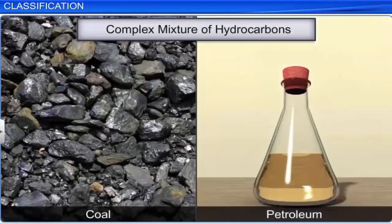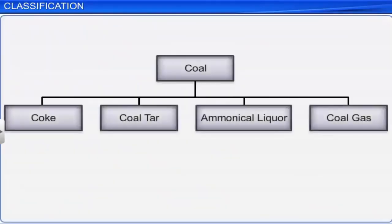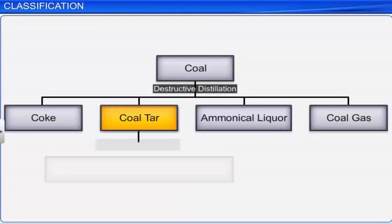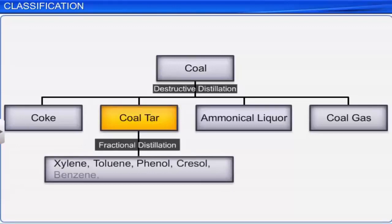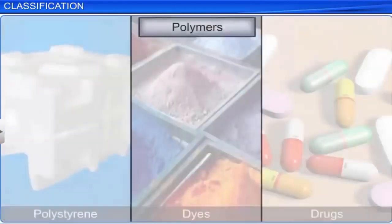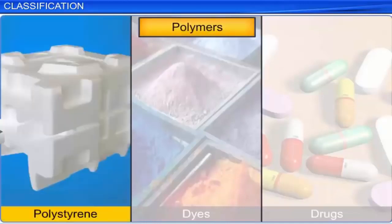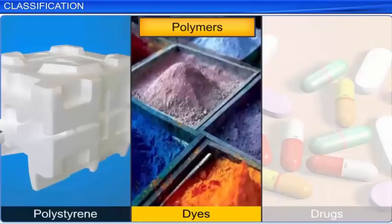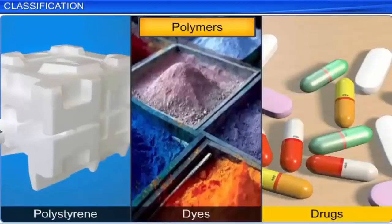Coal and petroleum are complex mixtures of hydrocarbons. Coal tar, a product of destructive distillation of coal, when subjected to fractional distillation, produces various aromatic compounds including benzene. These compounds are used in the preparation of various industrially useful products such as polymers like polystyrene, dyes, drugs, etc.